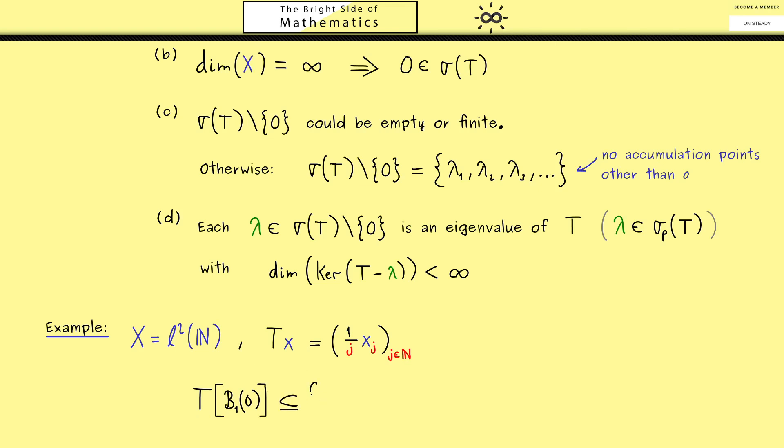Now in order to see this you have to look at the image of the unit ball under T. And then we can show that this image is contained in a set given by all the vectors y in L^2 that fulfill that the absolute value of y_j, so the jth component of y, is less or equal than 1 over j.